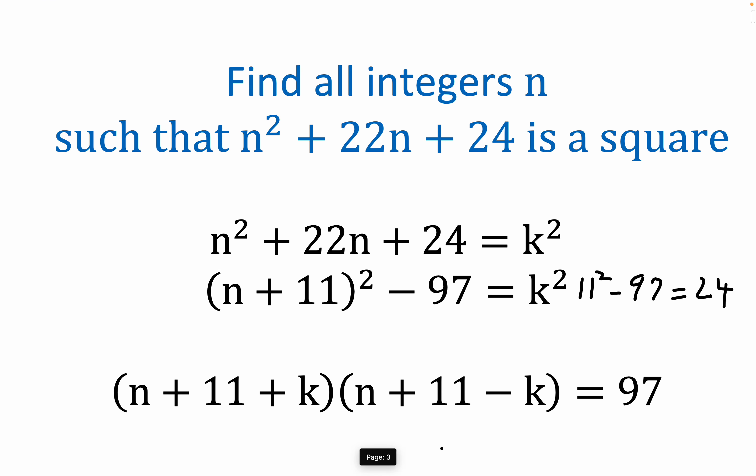This is really in the form of the difference of two squares. This is a squared, and if you bring this over and reverse this, you get something of the form a plus B, where a is n plus 11 and K would be your B. So you have something in the form a plus B times a minus B.